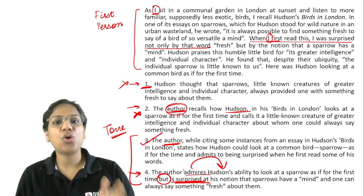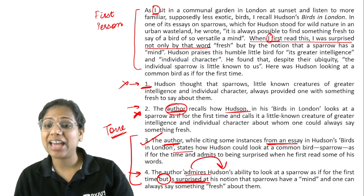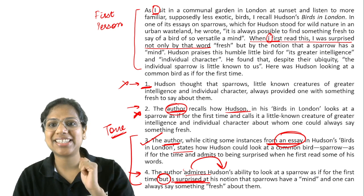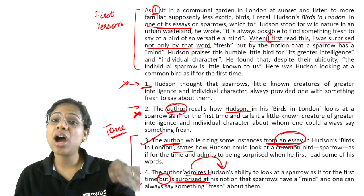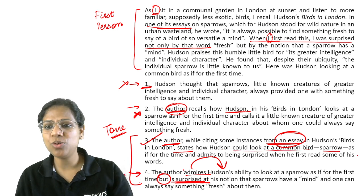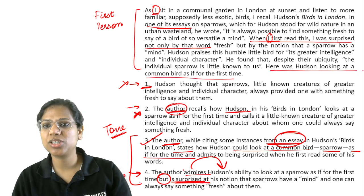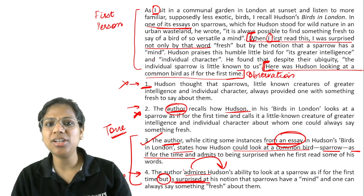Option 3 is our answer. The author, while citing some instances from an essay in Hudson's Birds in London — very specific, something that's in the paragraph too, we talk about one essay — states how Hudson could look at a common bird, sparrow, as if for the first time. This is the author's observation about Hudson, and this captures the author's reaction or the author's feeling on reading it.